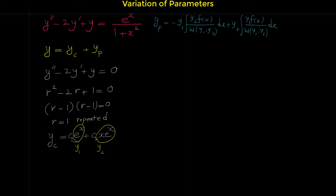What is f(x) in this formula? f(x) is the function on the right side of the equation, so f(x) is e^x over (1 plus x squared). Now we know y₁, y₂, and f(x), and we need to find the Wronskian of the two functions.